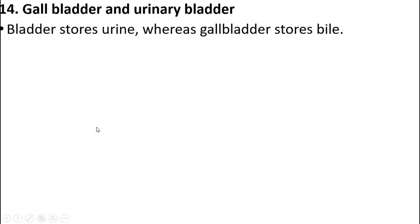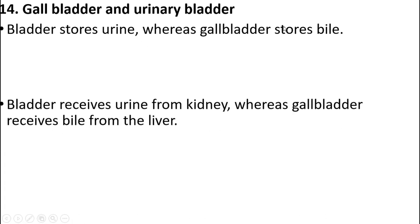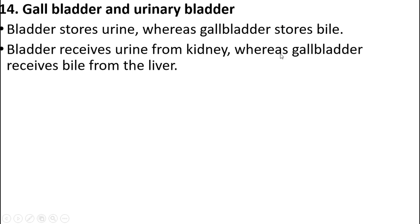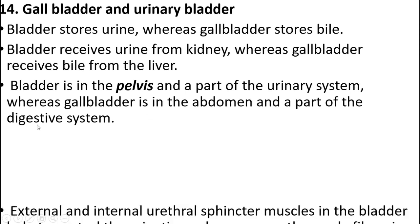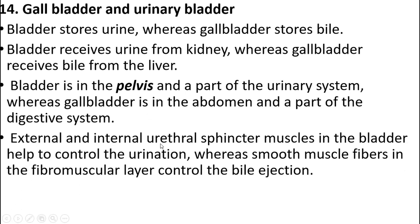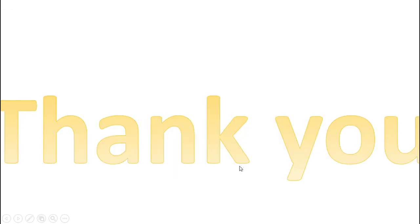Gallbladder and urinary bladder: the bladder stores urine whereas the gallbladder stores bile. The bladder receives urine from the kidney whereas the gallbladder receives bile from the liver. The bladder in the pelvis is part of the urinary system, whereas the gallbladder is in the abdomen as part of the digestive system. External and internal urethral sphincter muscles in the bladder help to control urination, whereas smooth muscle fibers in the fibromuscular layer control bile ejection. Thank you for listening.